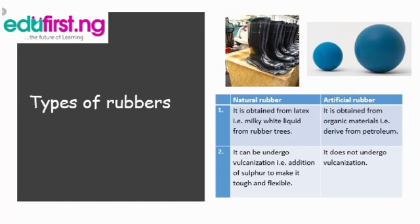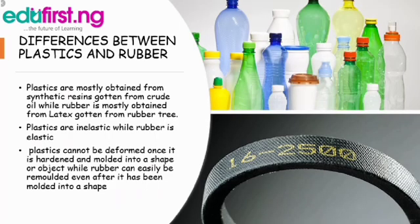Artificial rubber cannot undergo vulcanization. Now, what are the differences between plastics and rubber? Plastics are mostly gotten from synthetic sources while rubber is mostly gotten from latex. Plastics are mostly not elastic, but rubber materials are usually elastic. Plastic cannot be deformed once it is hardened, while rubber can be remolded when melted or reshaped — though not all types of rubber.